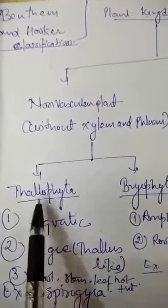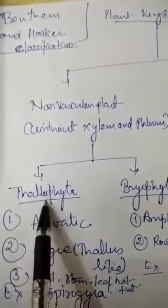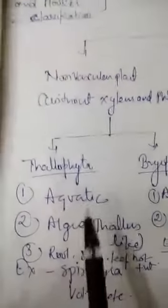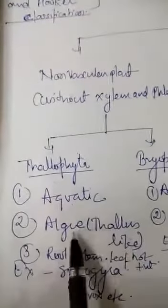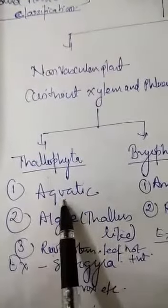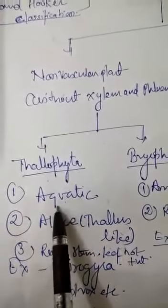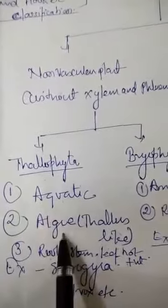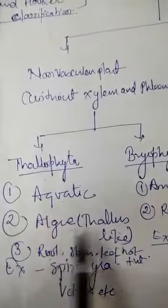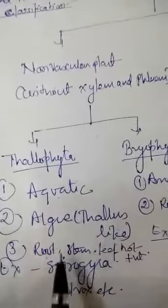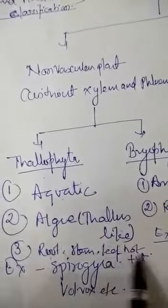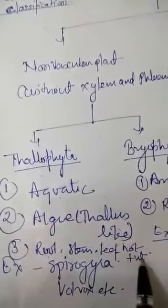Thallophyta includes algae, which are generally called algae. Some common characteristics of class Thallophyta are: they are totally aquatic, their body is thallus-like, and their body cannot be divided into root, stem, and leaf. Common examples are Spirogyra and Volvox.